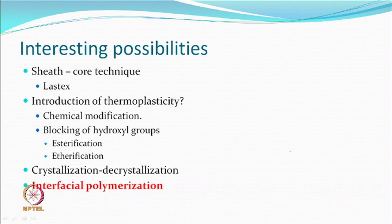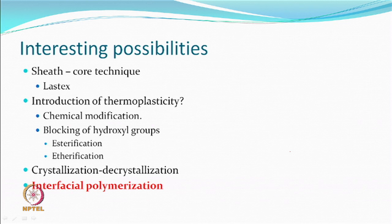Interfacial polymerization of spun yarns — let us say cotton — has also been attempted. This is different from the introduction of thermoplasticity by chemical modification; here there is no chemical modification, it is only deposition of a polymer on the surface. This was found to be one of the easier techniques to get a layer of thermoplastic material on fibre surfaces.